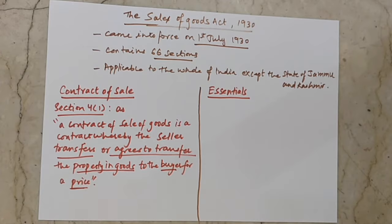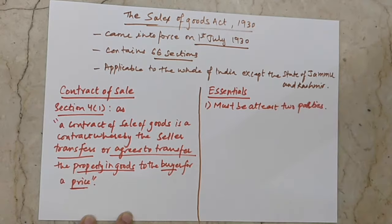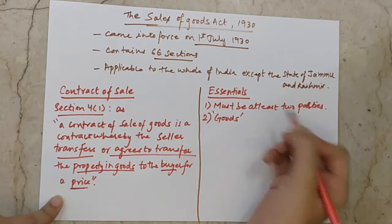Now let's understand the essentials. The first essential is that there should be at least two parties — a seller and a buyer. We can say that there must be at least two parties in the contract of sale.